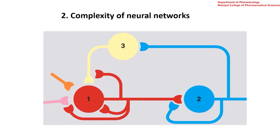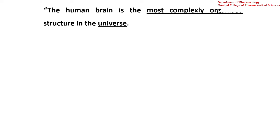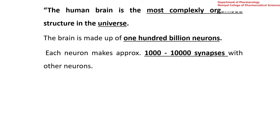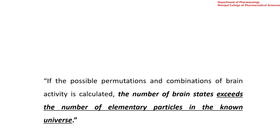To illustrate how complex the entire system is, I will quote V.S. Ramachandran, an Indian-American neurobiologist: 'The human brain is the most complexly organized structure in the universe. The brain is made up of 100 billion neurons and each neuron makes approximately 1,000 to 10,000 synapses with other neurons.' If the possible permutations and combinations of brain activity are calculated, the number of brain states exceeds the number of elementary particles in the known universe. So the human brain is a truly fascinating organ.